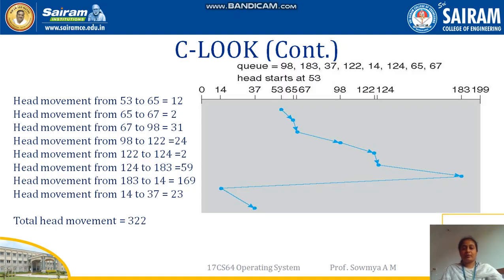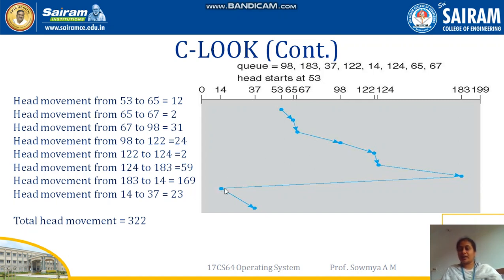With C-LOOK we have fewer total head movements because the unnecessary movement from 183 to 199 and then from 199 to 0 is eliminated. Instead, we move directly from 183 to 14. This is how C-LOOK overcomes the disadvantage of unnecessary head movements in C-SCAN. I hope you understood the topic. Thank you.